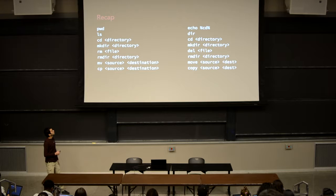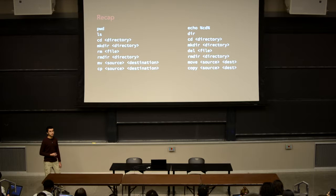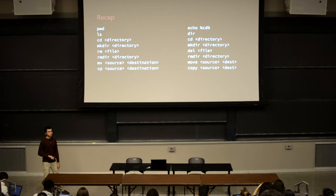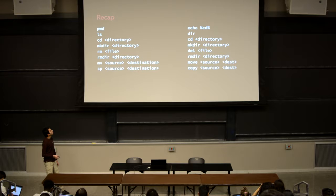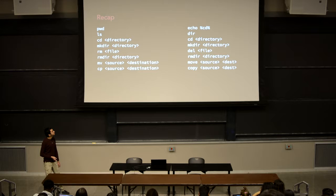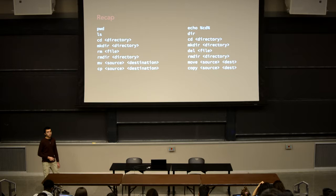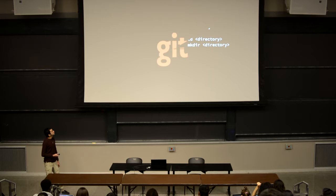So this is a recap of the commands we went over, along with the Windows equivalents. pwd is print working directory, which reveals where you are in your terminal. ls lists all the files in your current directory — dir is equivalent on Windows. mkdir is make directory, which creates a new directory inside your current location. rm removes a file or files — the Windows equivalent is del. rmdir removes a directory. mv moves a file from source to destination. cp copies a file from source to destination.